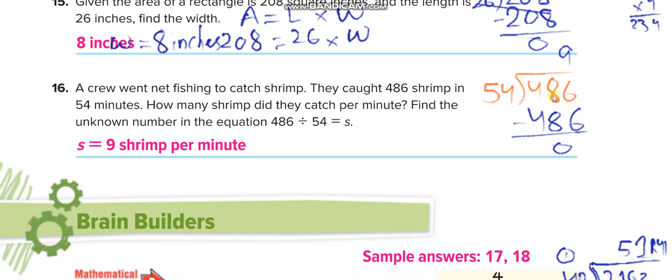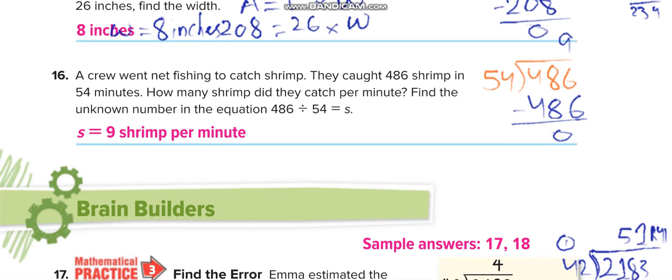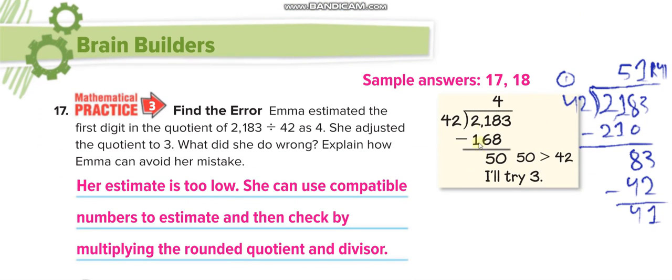There is a mistake in this problem. When you subtract, you get 50, which is more than 42, so you can try one number bigger. Here we divided it for real, and the explanation is here.